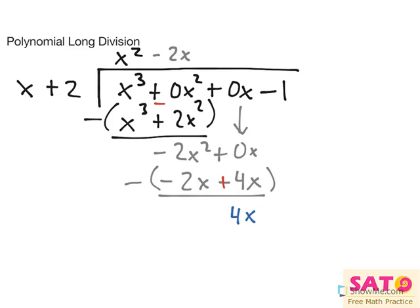4x minus 1. And finally, we'll do that one more time, and we'll get x times y equals 4x. That's plus 4. And 4x plus 8.